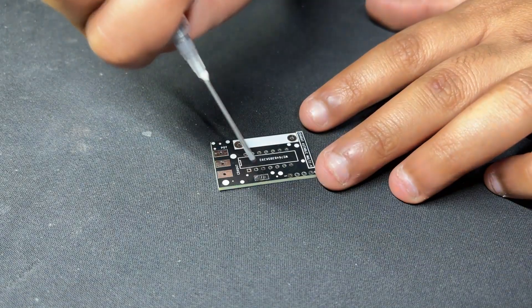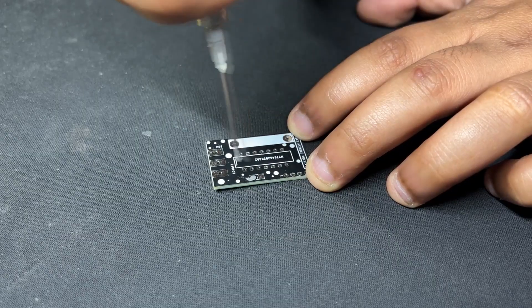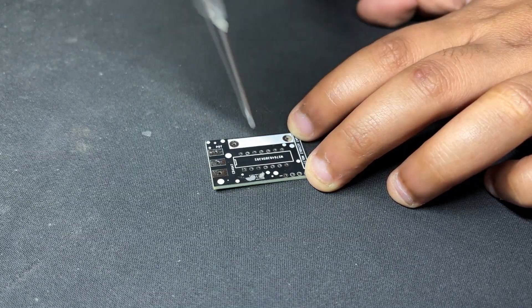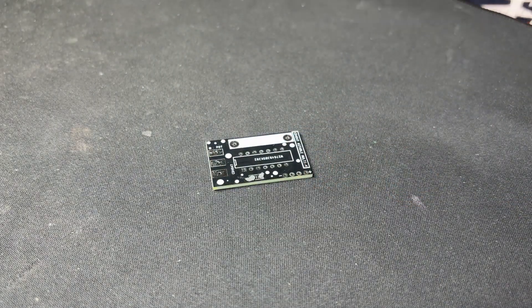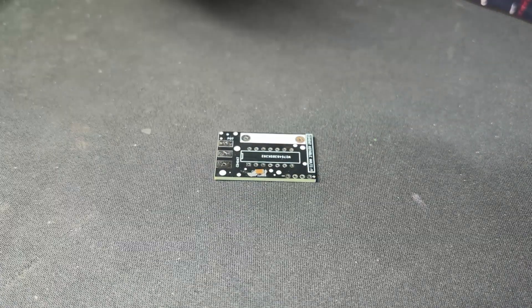The CD4047 driver assembly process begins by applying solder paste to the SMD components pad. Our driver board includes one SMD component, which is the 100nF decoupling capacitor. We use a tweezers to pick our capacitor and place it on its pad.